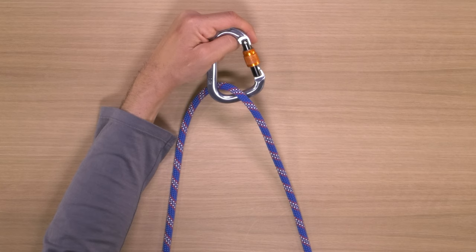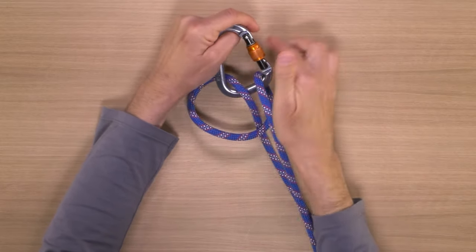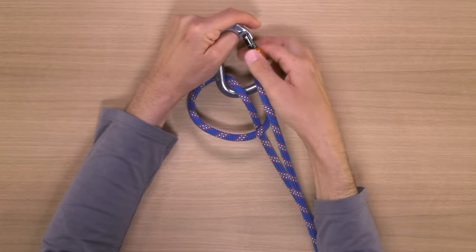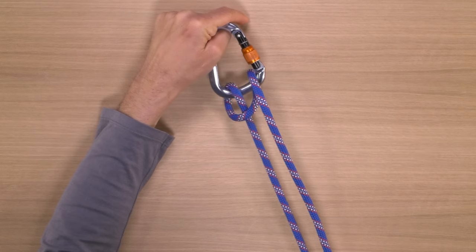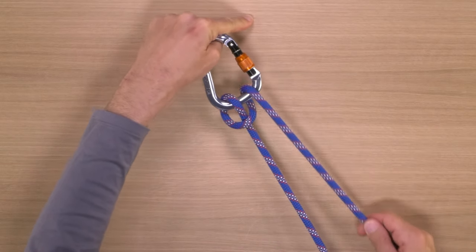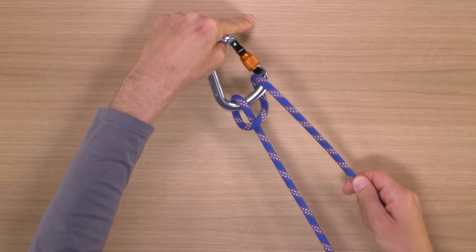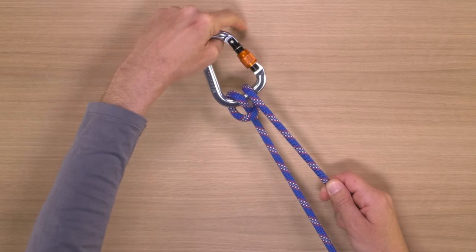To tie a munter hitch, put your rope through a carabiner, take the back strand, and bring it across the front strand and clip it through. Unlike with the clove hitch, you don't put a twist in it while bringing the back strand across the front. You should end up with a knot that slides through the carabiner, and depending on which strand you load, it may flip, as it has, of course, the two different orientations for feeding out rope versus pulling it in.